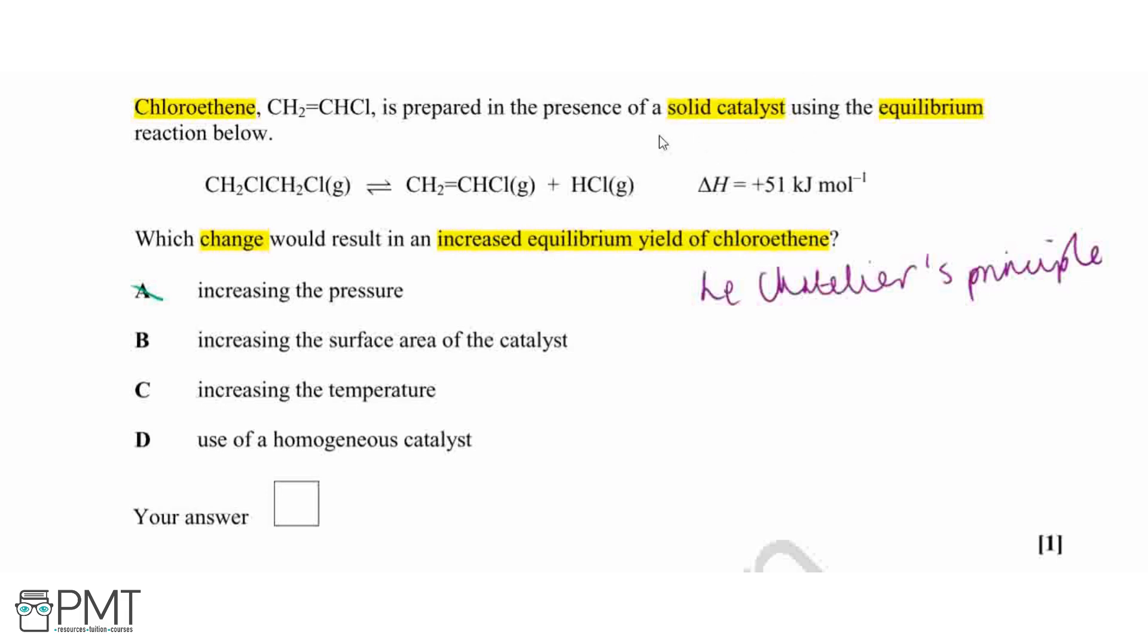Now, we were told that we're using a solid catalyst here. Because we've got a gaseous system, that means this is a heterogeneous catalyst. But increasing our surface area of this catalyst will increase the rate of reaction for both the forward and the reverse steps. So overall, we will not get an increased yield of our chloroethene because although we're increasing the rate, we're increasing it for both reactions—the forward and the reverse. So our overall effect will just cancel out.